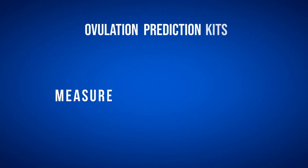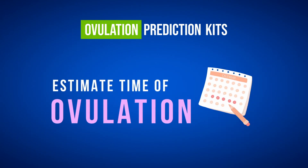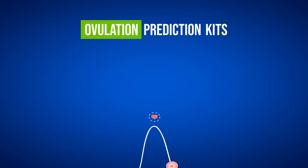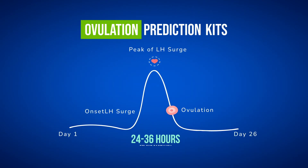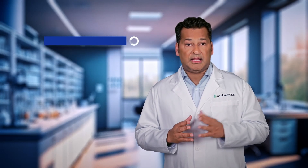Ovulation predictor kits, or OPKs, measure LH in the urine to estimate the time of ovulation. OPKs usually turn positive as the level of LH surges in the blood approximately 24 to 36 hours before ovulation. This is critically important since the egg is only viable for 12 to 24 hours after ovulation. If sperm is not present in the fallopian tube during this very narrow window of egg viability, no pregnancy will occur.